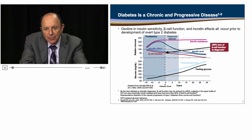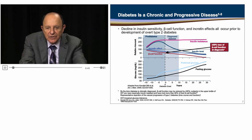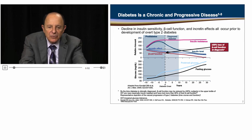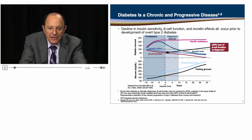Diabetes is a chronic progressive disease. Over time, changes in insulin resistance and insulin secretion lead to the onset of type 2 diabetes. The three core pathophysiologic defects — insulin resistance in muscle, insulin resistance in liver, and beta cell dysfunction — are responsible for the progressive nature of the disease.